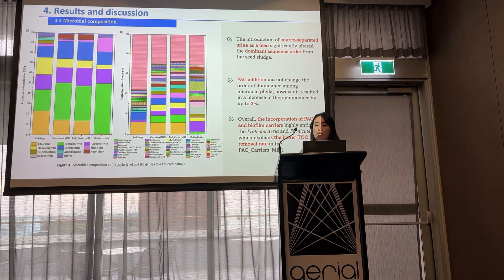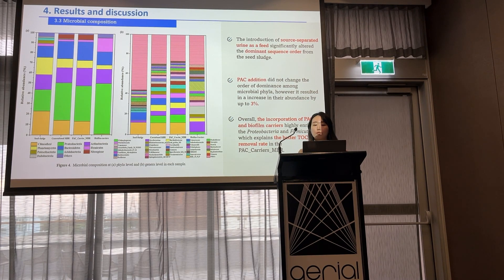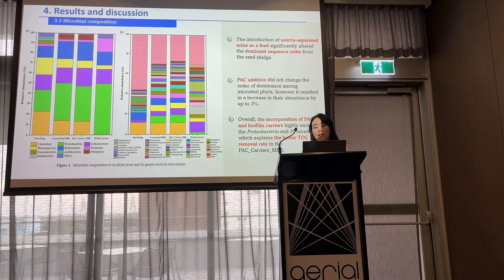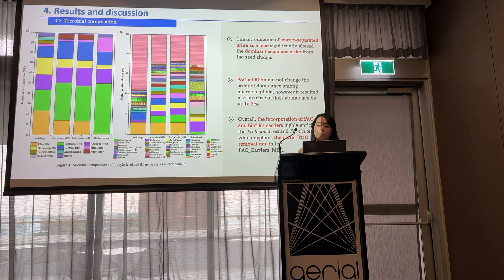Further taxonomic analysis down to phyla and genus level was conducted for more thorough and detailed information on the bacterial communities. The feed water change to source-separated urine significantly shifted the dominant sequencing order from the seed sludge samples. Interestingly, PAC addition did not change the order of dominance among the microbial phyla and genus, but resulted in an increase in their abundance by up to 3%. Overall, the incorporation of PAC and biofilm carriers highly enriched Proteobacteria and Firmicutes, which can explain the better TOC removal rate in the PAC carriers MBR.